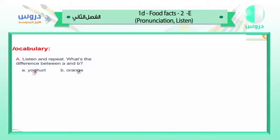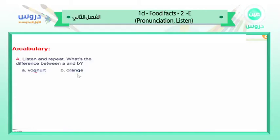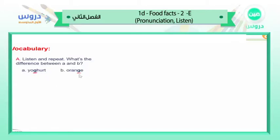This is G as we know, and this is also G, but in 'yogurt' we pronounce it as 'ga' — yogurt. And in 'orange' we pronounce it as the sound 'ja' — orange. So this is 'ga' and this is 'ja.' Yogurt — orange. Do you understand the difference?